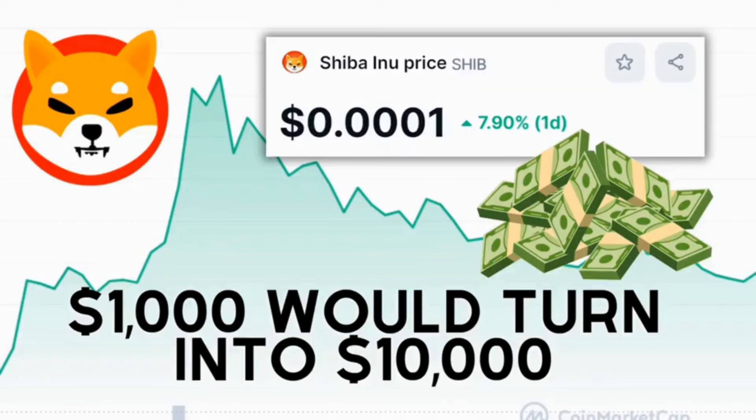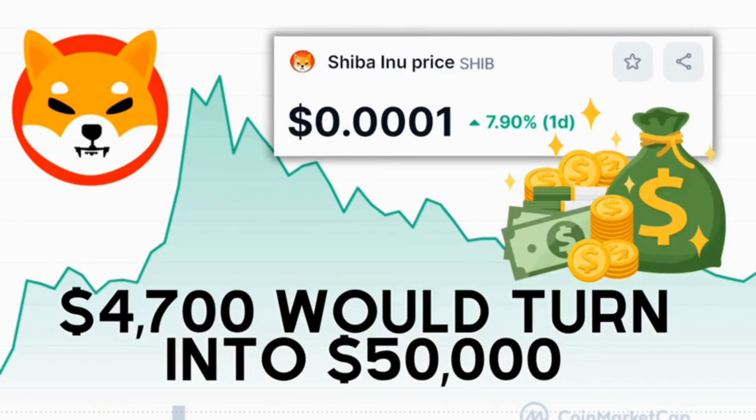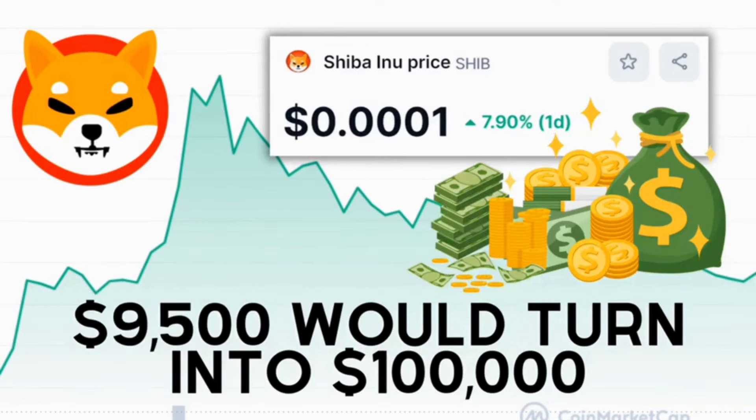Take, for example, someone holding 100 million tokens. Their assets, currently valued at less than $1,000, would leap to $10,000 at the projected price. Similarly, those with 500 million tokens, currently worth around $4,700, could see their investments surge to $50,000. And as for the holders of 1 billion tokens, valued at around $9,500, they might experience an impressive increase to $100,000.